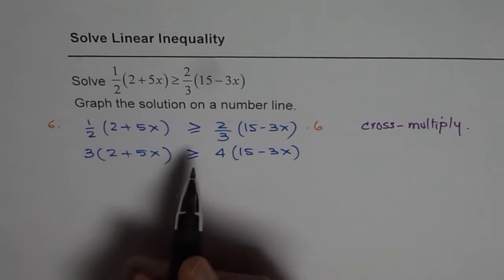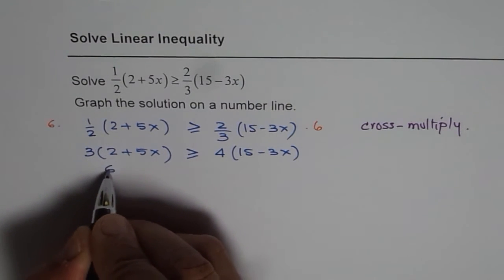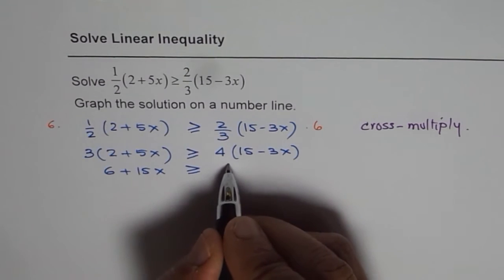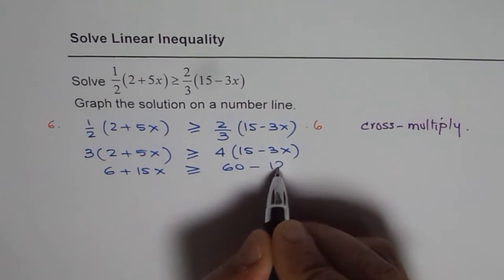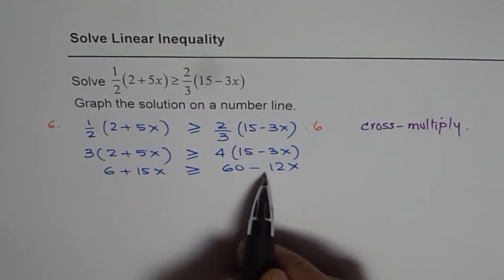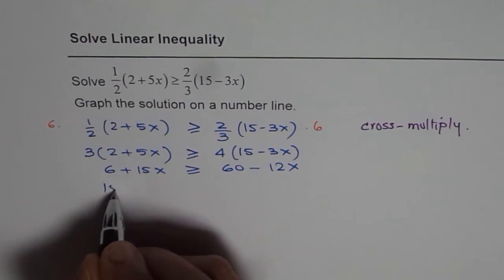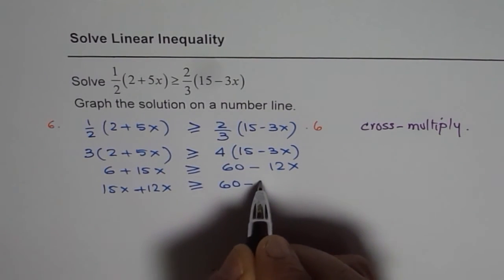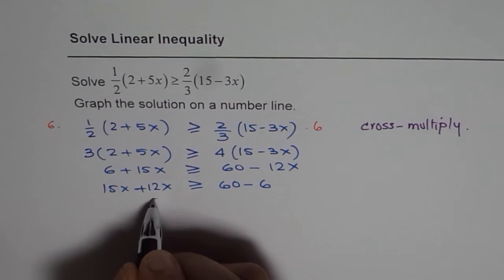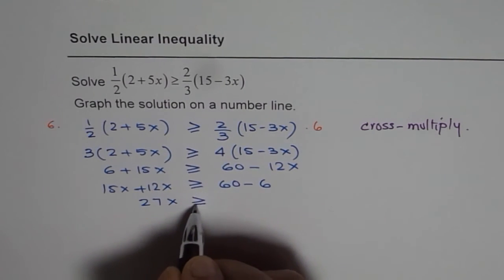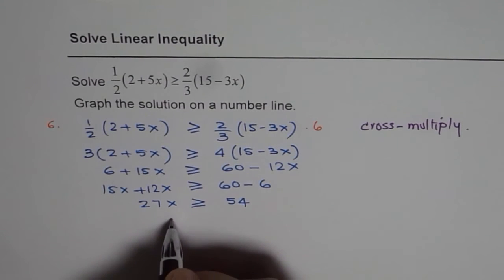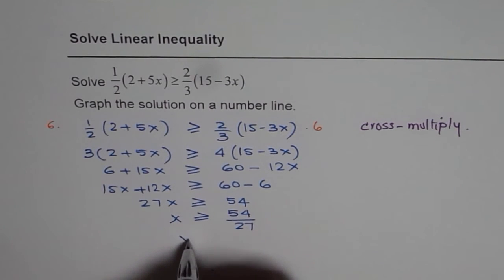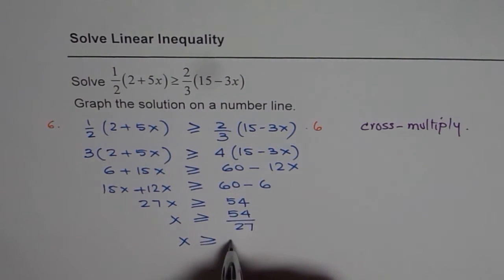Now we expand and simplify. We get 6 plus 15x is greater than or equal to 60 minus 12x. Bringing all the x terms to the left side, we get 15x plus 12x greater than or equal to 60 minus 6. That gives 27x greater than or equal to 54, and x is greater than or equal to 54 divided by 27, which gives x greater than or equal to 2.